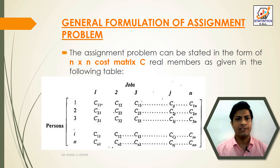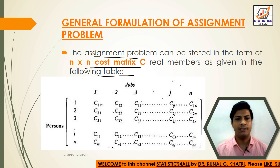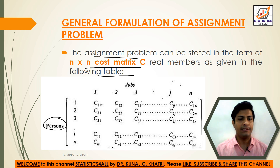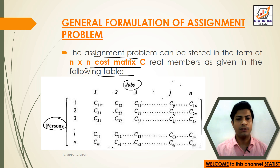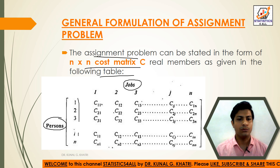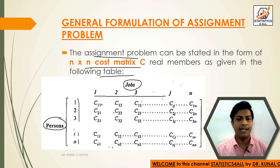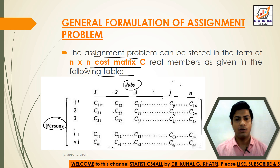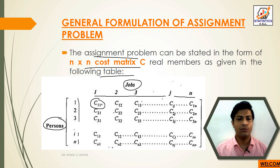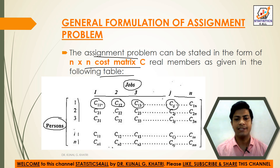General formulation of the assignment problem: the assignment problem can be stated in the form of an n×n cost matrix C, where persons are given in rows and jobs are given in columns. Here, persons are indexed 1, 2, 3, ..., n (rows) and jobs are indexed 1, 2, 3, ..., n (columns). C11 means first row first column, C12 first row second column, C13 first row third column, and so on up to C1j and C1n.